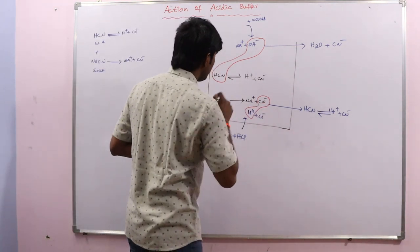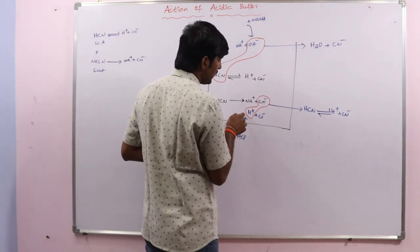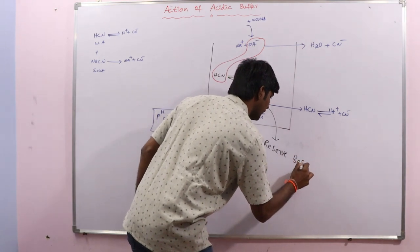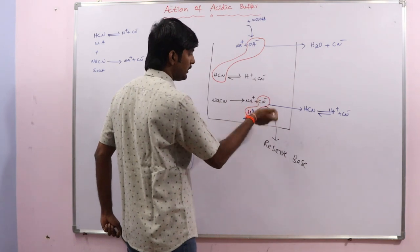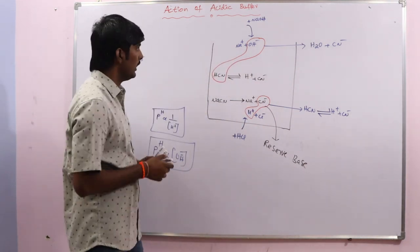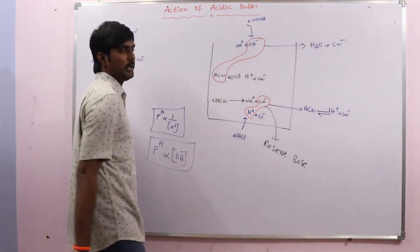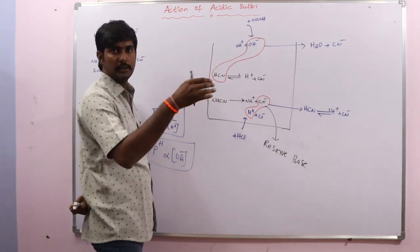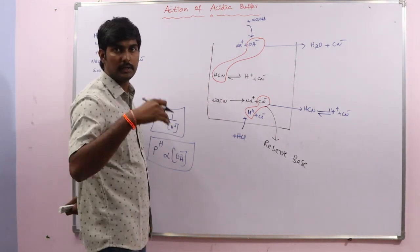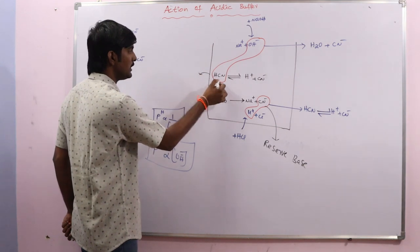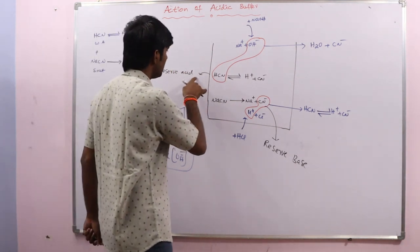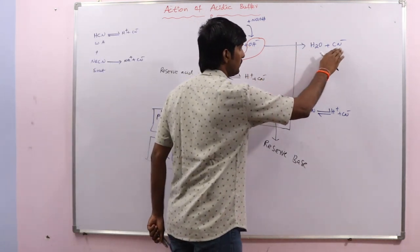The CN⁻ anion — or conjugate base — which neutralizes the H⁺ ions added to the buffer solution is called the reserve base. When we add strong base, the OH⁻ ions immediately react with the undissociated acid left in the buffer solution. This undissociated acid is called the reserve acid. The reserve acid neutralizes the OH⁻ ions to give water molecules and CN⁻.